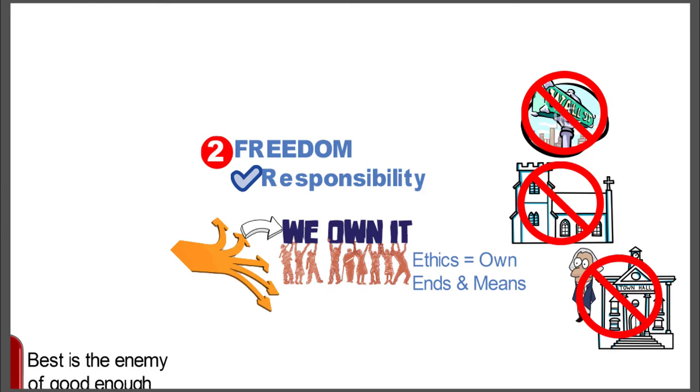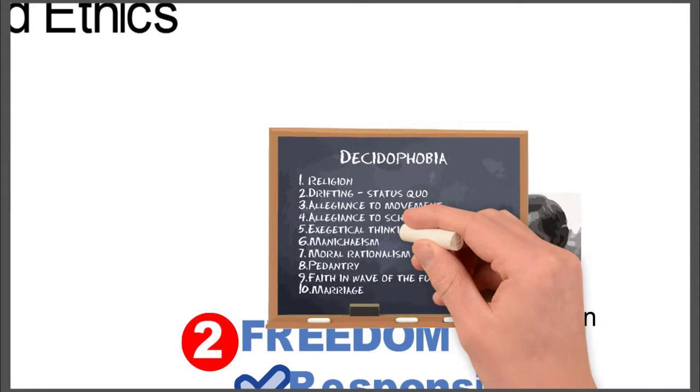This is in sync a lot with what Kaufman talks about when he talks about the 10 strategies that decide a phobia that prevents somebody from becoming an autonomous person.